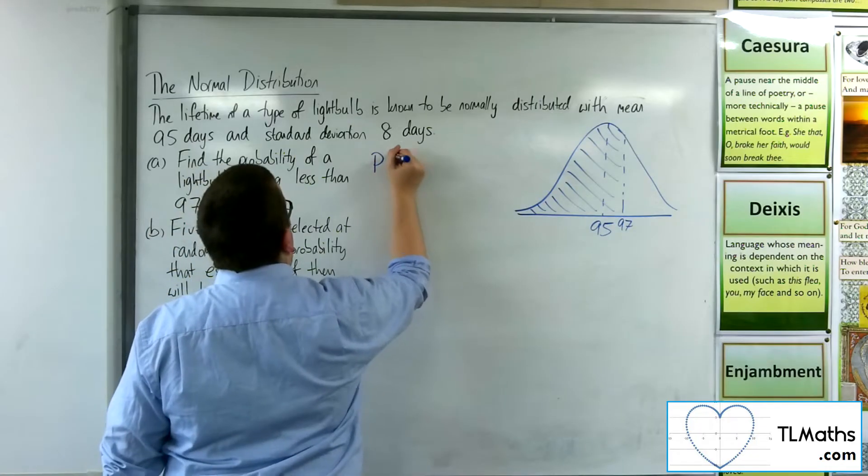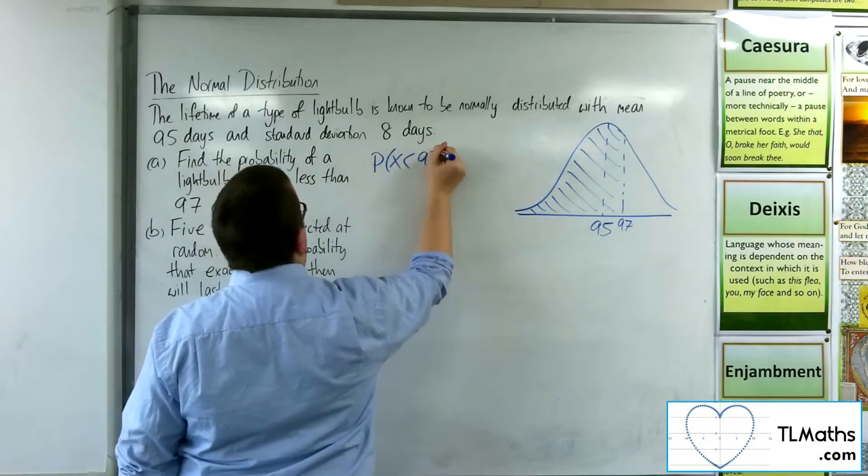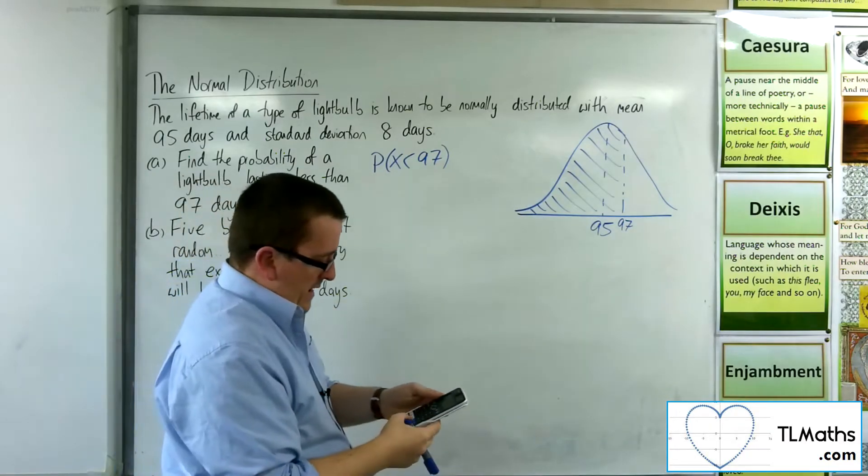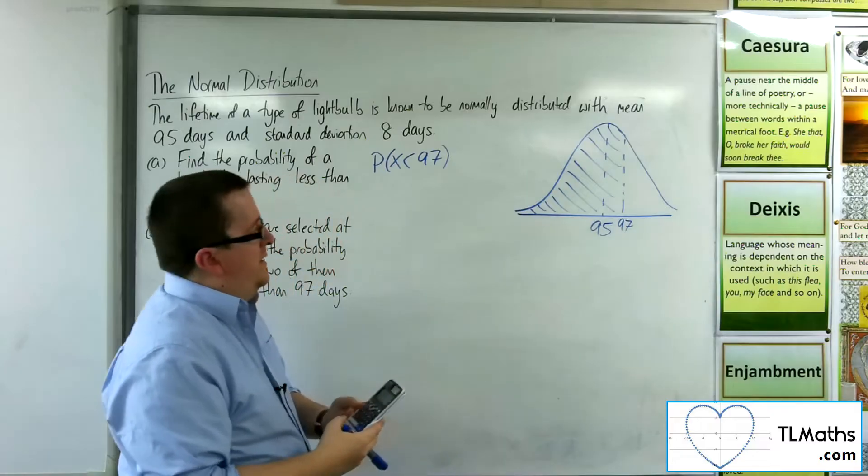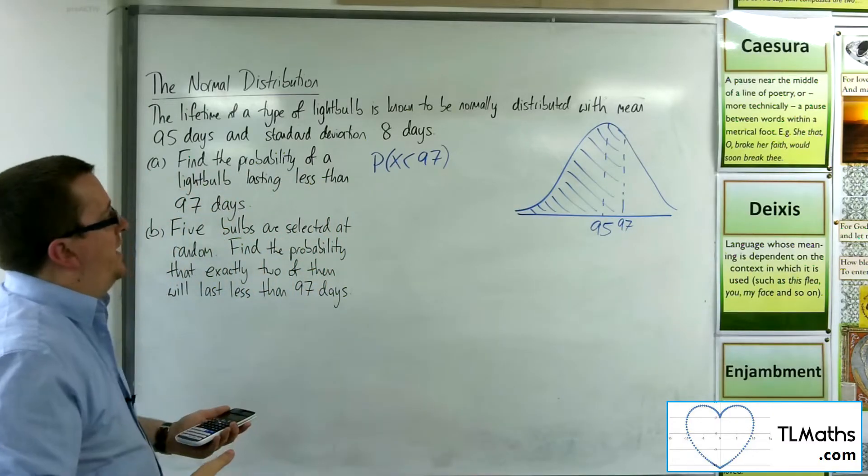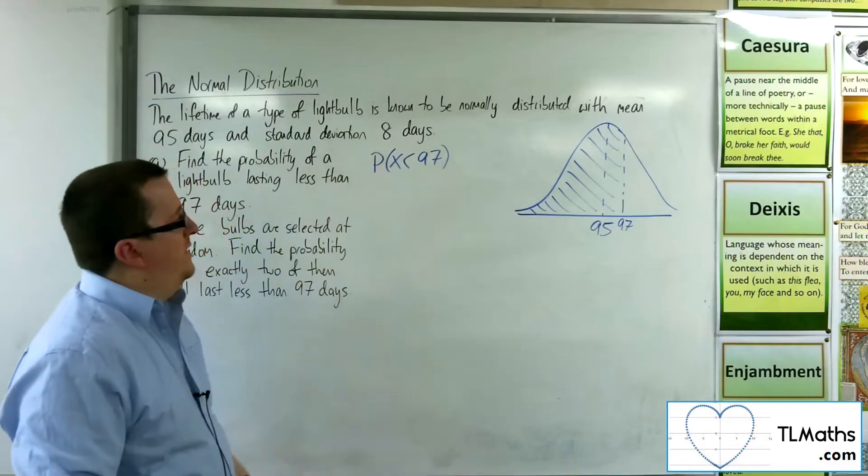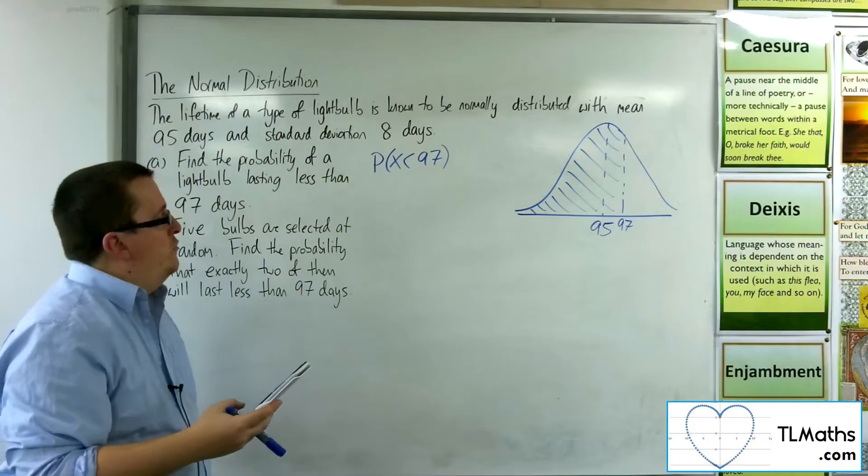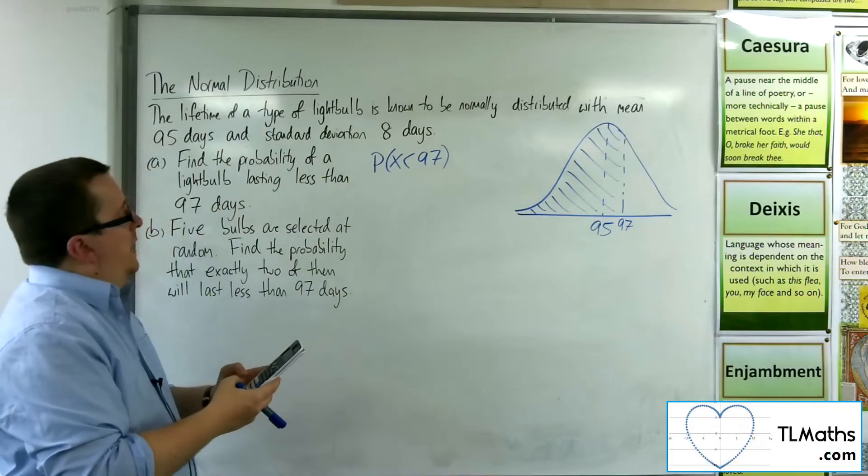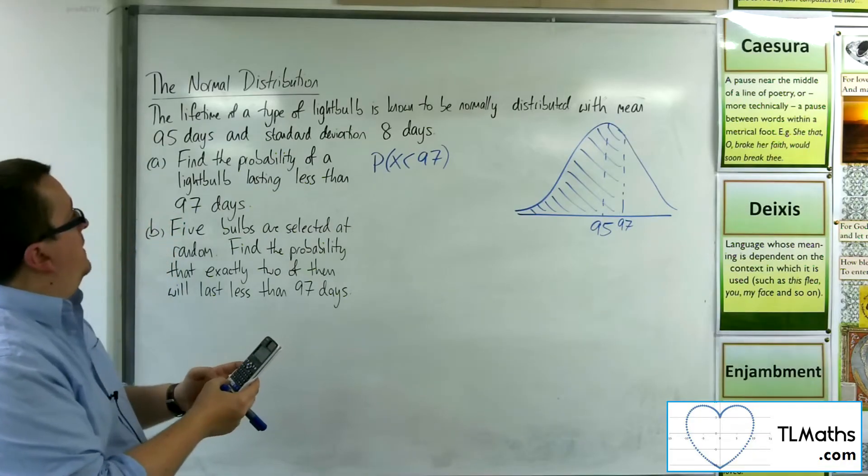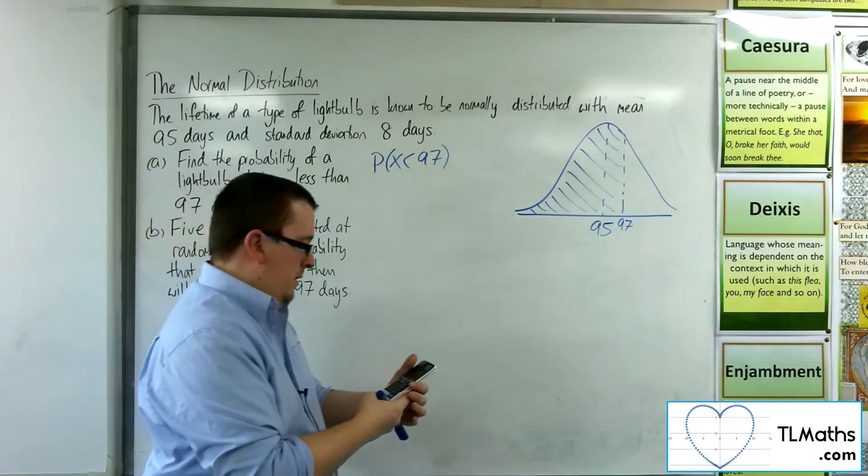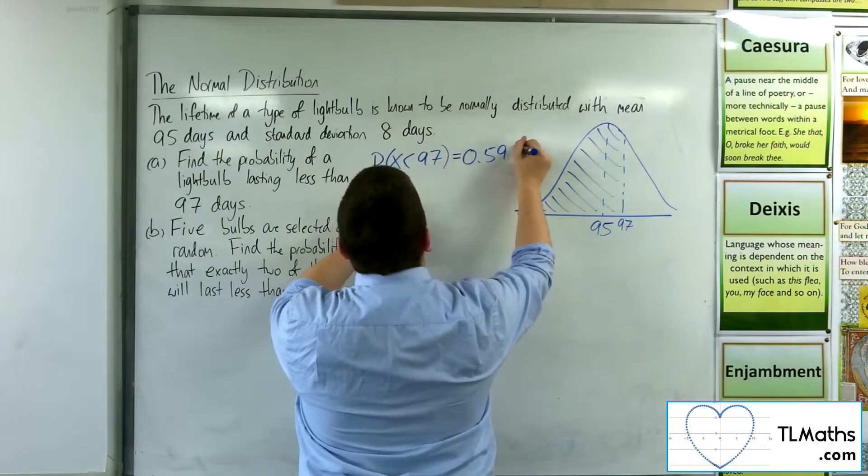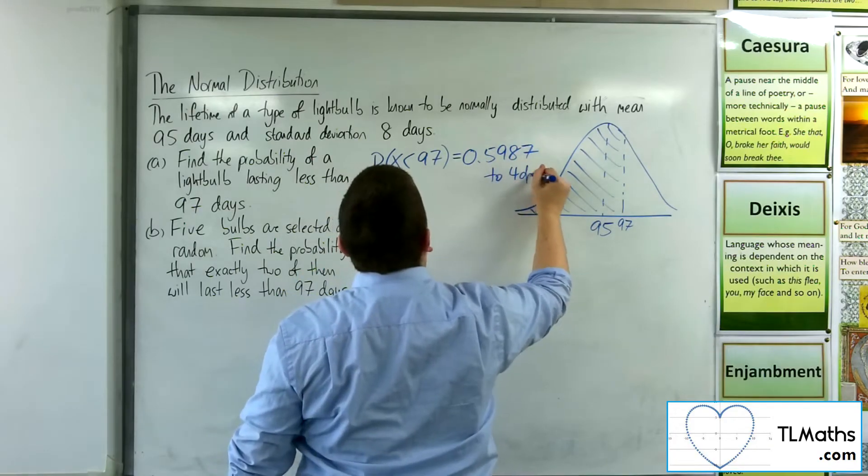So the probability of x being less than 97. I can go straight to my calculator on this one. Menu number 7, normal CD. Now the lower value needs to be low enough down. So if the standard deviation is 8, then 10 standard deviations down will be fine. I'll just go with 0. So lower 0, upper 97, standard deviation is 8, and the mean is 95. And we get 0.5987 to 4 decimal places.